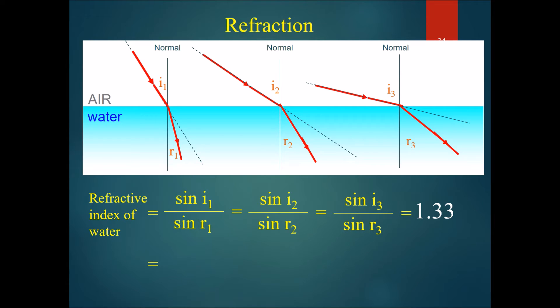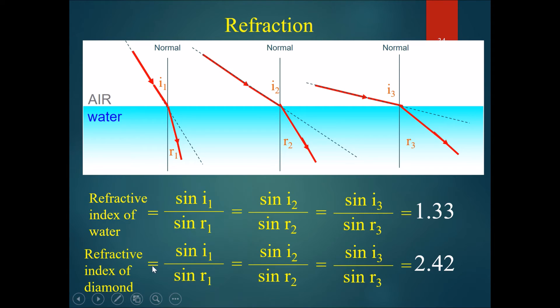The refractive index of water is 1.33, and this doesn't change. Similarly, we know the refractive indices of many other substances. For example, the refractive index of diamond is 2.42, and the ratios of sine i to sine r at any angle all produce 2.42 if it is from air to diamond.